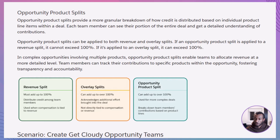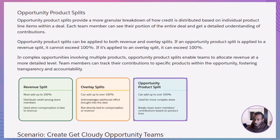Opportunity teams are perfect for temporary collaborations on a single deal. They differ from account teams, which focus on long-term customer relationships. When it comes to crediting work, use revenue splits when distributing a fixed commission pool tied to the deal's revenue. Choose overlay splits to award additional credit where extra effort or expertise was involved. Apply product splits for granular breakdowns by product, ensuring transparency and accountability on who contributed what.